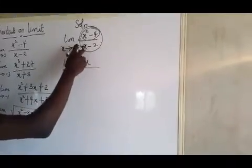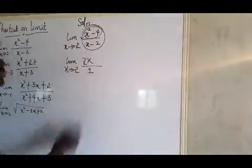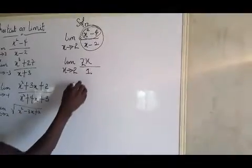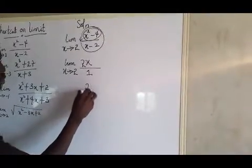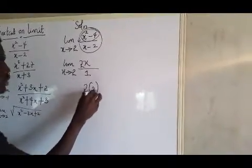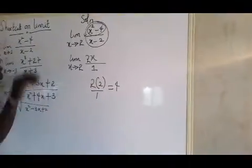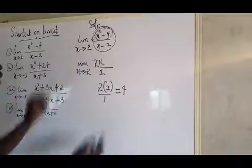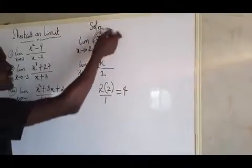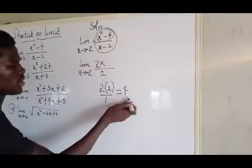Over x, if you differentiate your x, it will be 1. So put in the limits now, and that will be 2 multiplied by 2 over 1. And that will give you 4. So the limit as x tends to 2 of this expression is 4. Do we get that now?